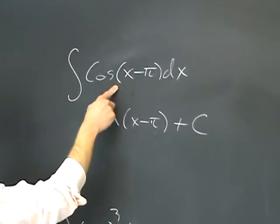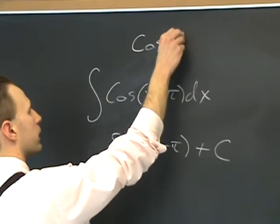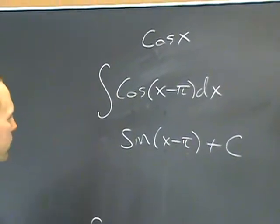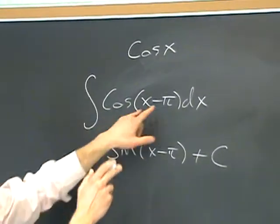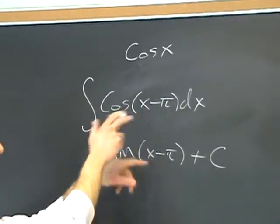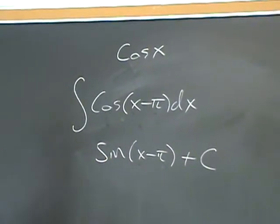This is really similar to just anti-differentiating cosine x, which goes to just sine x. So if the argument x is replaced with x plus or minus something when you go to do the integral, you really don't have to worry about it, and you can pretend that it's not even there.